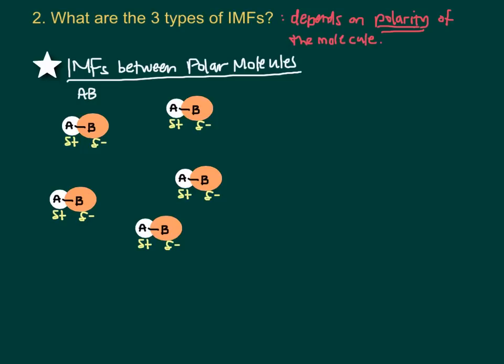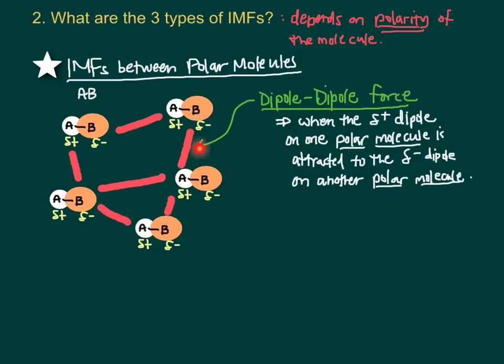Because these molecules have dipoles — each with a slightly positive and a slightly negative end — the slightly positive end of one would be attracted to the slightly negative end of another. You get this force of attraction between dipoles. This is called a dipole-dipole force, defined as the attraction between the positive dipole of one polar molecule and the negative dipole on another adjacent polar molecule.